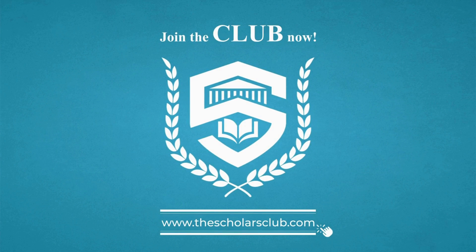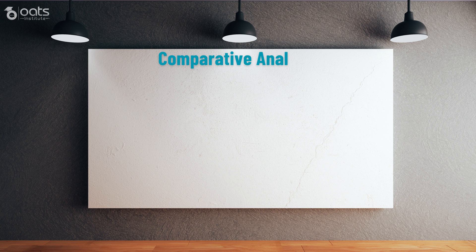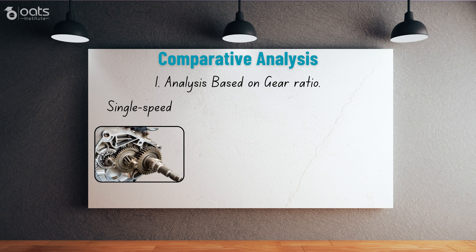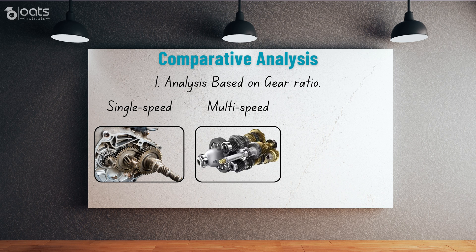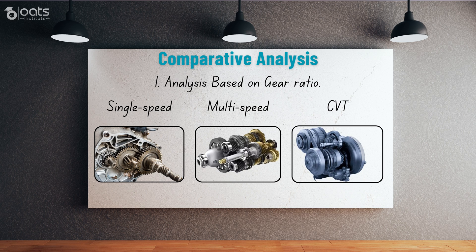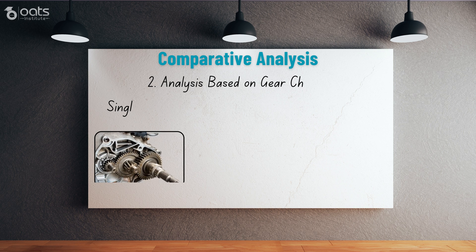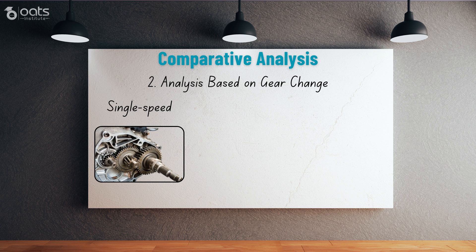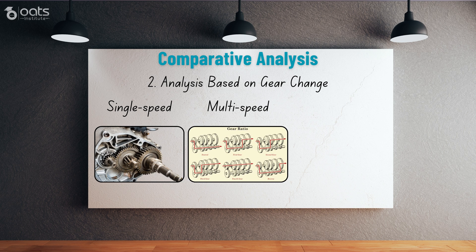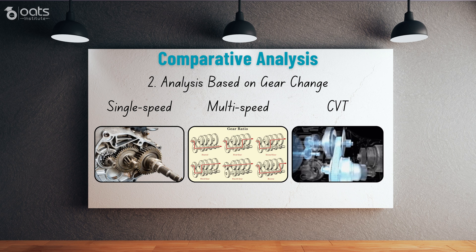Now let's conduct a comparative analysis between single-speed transmission, multi-speed transmission, and CVT in electric vehicles. First, based on gear ratio: single-speed transmission has only one fixed gear ratio, multi-speed transmissions have multiple gears that can be manually or automatically selected, while CVT uses variable diameter pulleys and a belt or chain to provide an infinite number of gear ratios. Second, based on gear change: single-speed transmission connects the electric motor directly to the wheels without the ability to change gears; multi-speed transmission varies the gear ratio based on driving conditions and power requirements; whereas in CVT, the transmission ratio is continuously adjusted based on driving conditions and power demands.